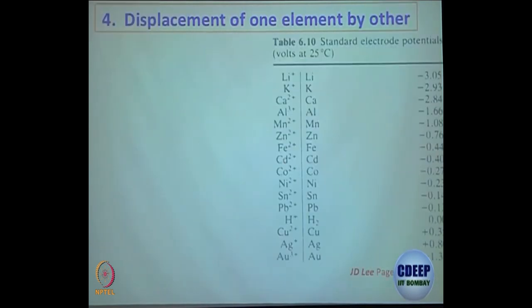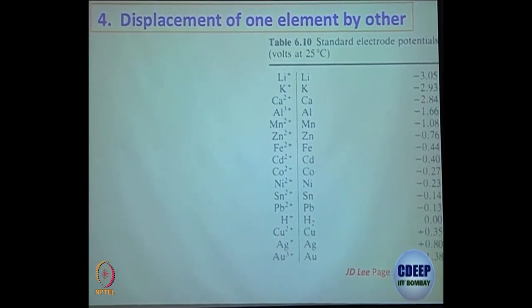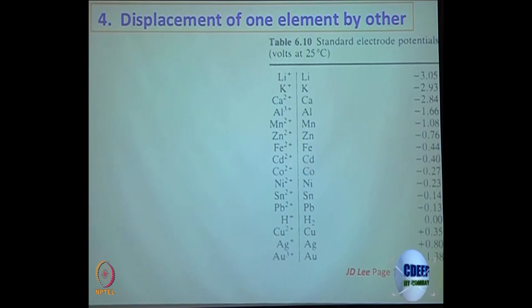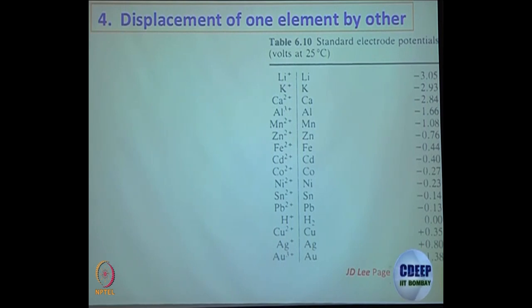You cannot always have a single generalized approach. For example, ore available in Mumbai for nickel separation will be different from what is available in Rajasthan, so you have to know what elements are present in your ore and choose your techniques accordingly. Another approach which is very attractive is the use of one metal to get another metal — it is a sacrificial method. You sacrifice one metal to get another more precious metal. What determines which metal you are going to sacrifice is what the electrochemical series is all about.